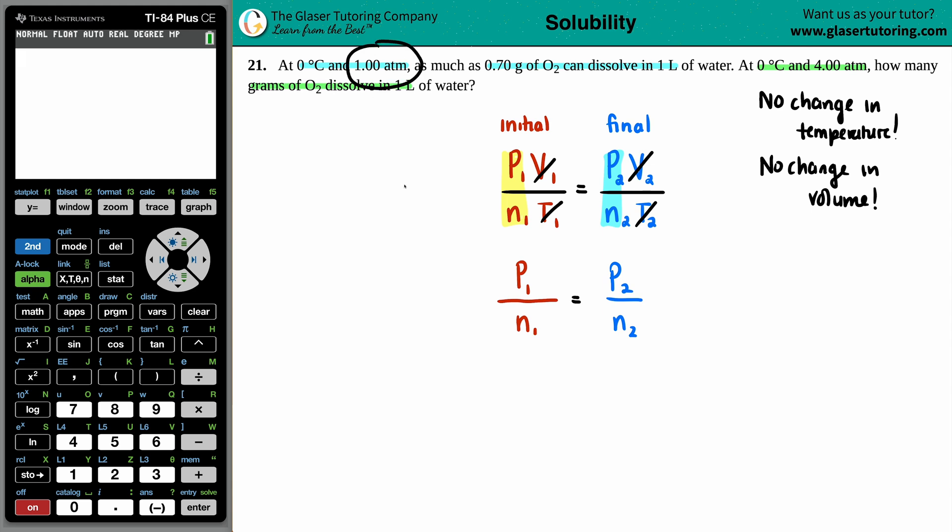Now your first pressure that they talked about was one ATM. So that's going to go in the P1, write one ATM. And then they said now we have four ATM. So the P2 is going to be four.